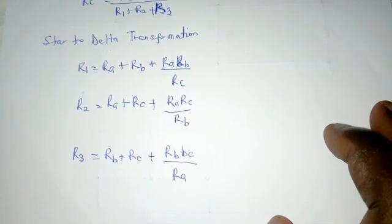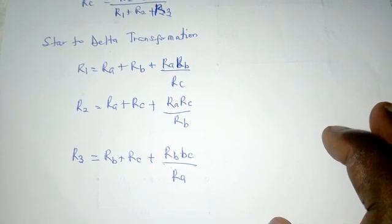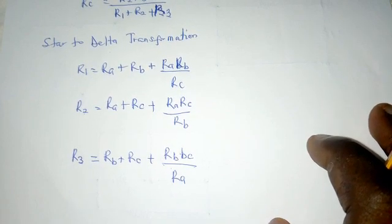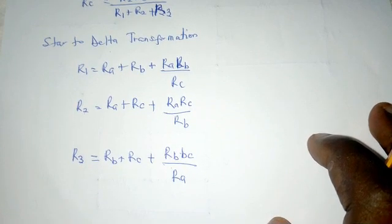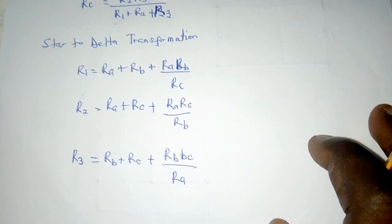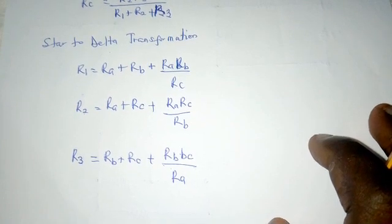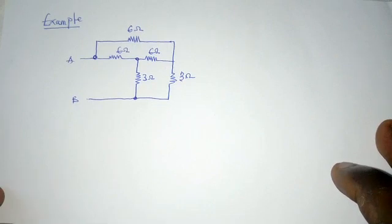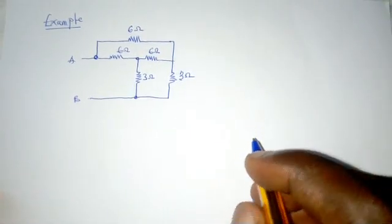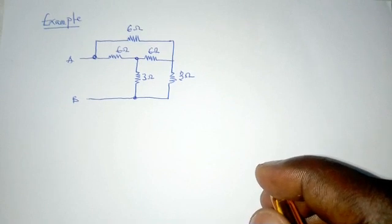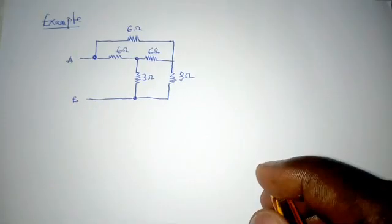Once we do these conversions, some resistors appear to be in series or in parallel, and that helps us find the effective resistance. The choice of whether to convert from star to delta or delta to star depends on whichever one you think will be easier given the circuit diagram. In this example, it is not possible to find any two or more resistors in series or parallel, so we must identify three resistors in star or delta and convert them.